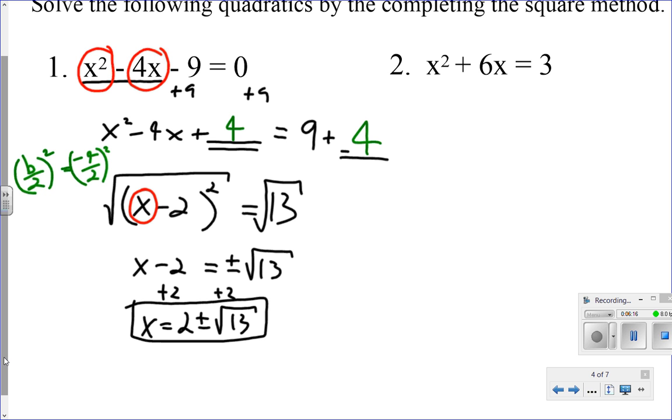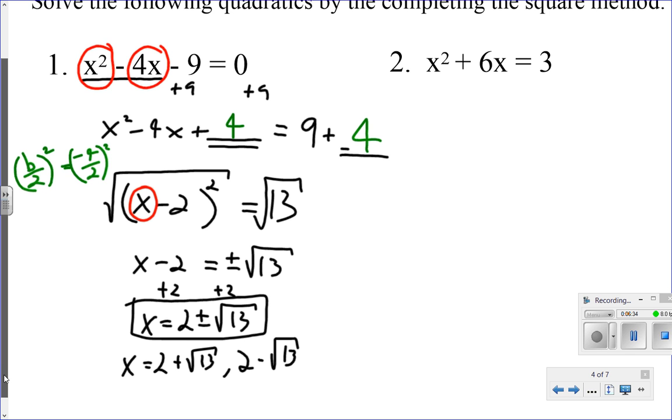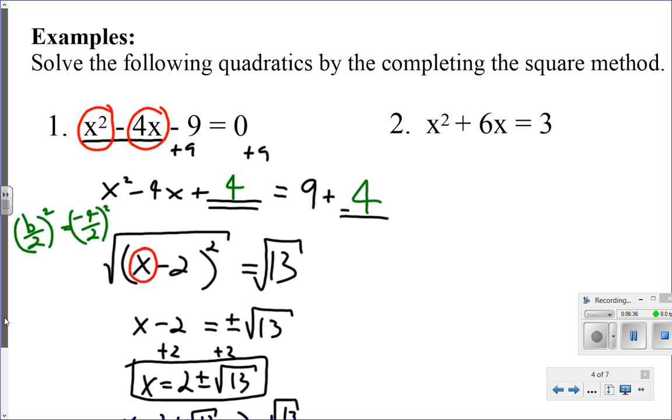There is two solutions there. I can choose to leave it as that or I can write both of them out as 2 plus the square root of 13 and 2 minus the square root of 13. So I was able to solve for that quadratic without having to factor it.